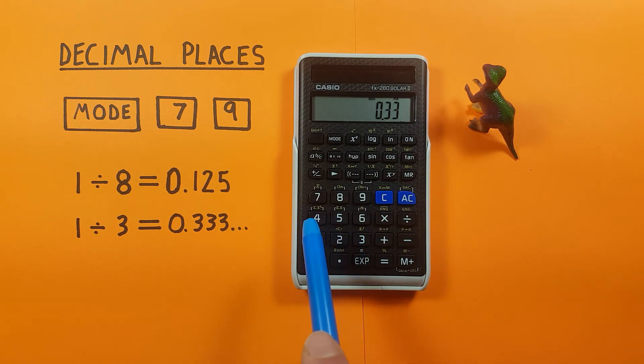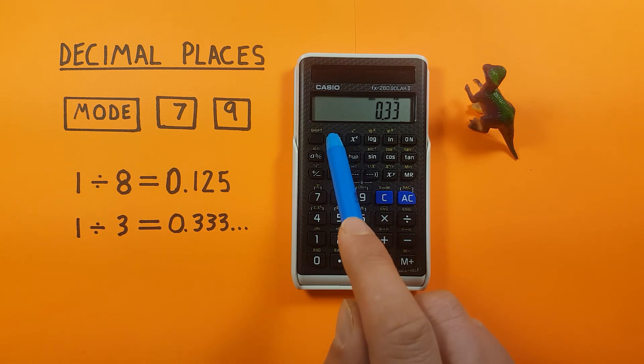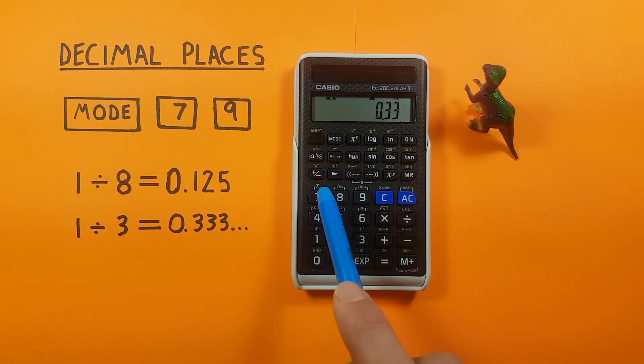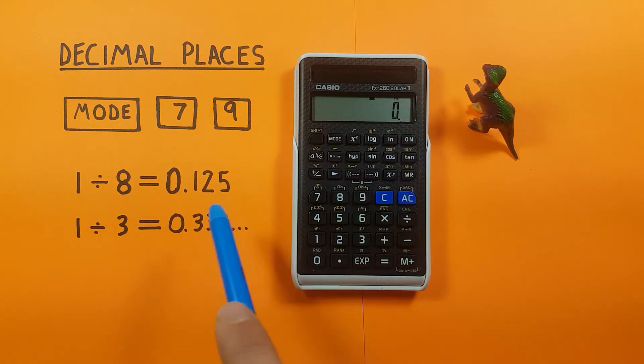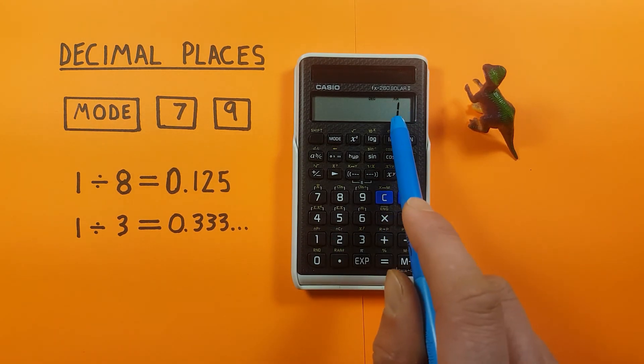We can choose anywhere between 0 and 9 decimal places and if we choose 0 decimal places mode 7 0 you can see it's rounded to 0 because that 0.3 would not round up. Whereas if we go 1 divided by 2 which should give us 0.5 it rounds up to 1.